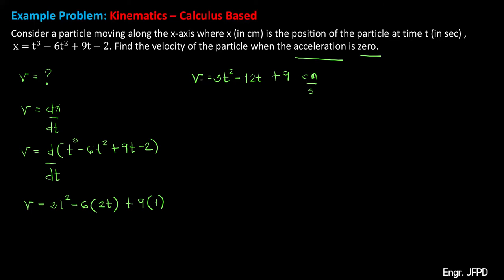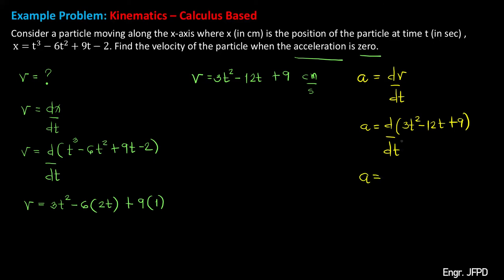We cannot solve for the velocity yet because we do not know the time when the acceleration is 0. We need to find the acceleration and equate it to 0 to solve for time t. The acceleration a is the derivative of velocity v with respect to time t. Taking the derivative of 3t squared minus 12t plus 9 with respect to t: the derivative of 3t squared is 6t, the derivative of negative 12t is negative 12, and the derivative of 9 is 0. The acceleration function is a equals 6t minus 12.